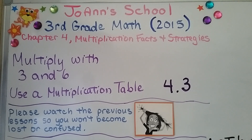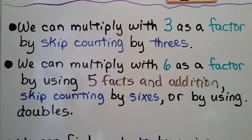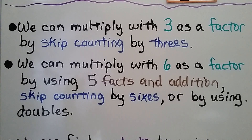Lesson 4.3, Multiply with 3 and 6. We're going to use a multiplication table. We can multiply with 3 as a factor by skip counting by 3's. We can multiply with 6 as a factor by using 5 facts in addition, skip counting by 6's, or by using doubles.